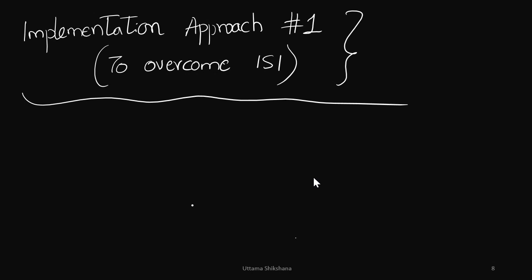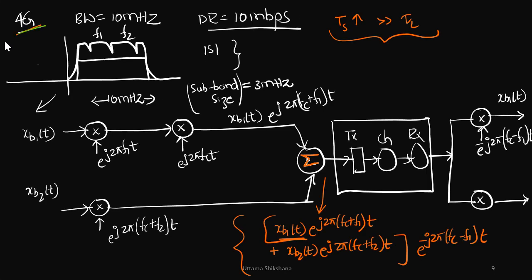Hi friends, welcome back to the channel. In this video I will talk about implementation approach number one to overcome ISI. Basically in case of 4G, we wanted to go for higher bandwidth to support higher data rate.